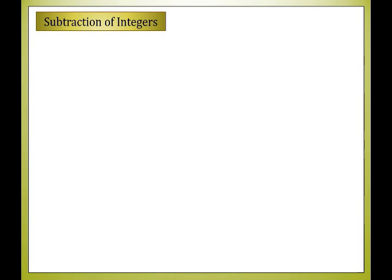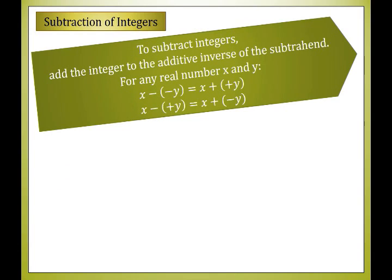Now let's have subtraction of integers. To subtract integers, add the integer to the additive inverse of the subtrahend. For any real numbers x and y: x minus negative y becomes x plus positive y, and x minus positive y becomes x plus negative y. The subtrahend is changed to its additive inverse, and the operation changes from subtraction to addition.